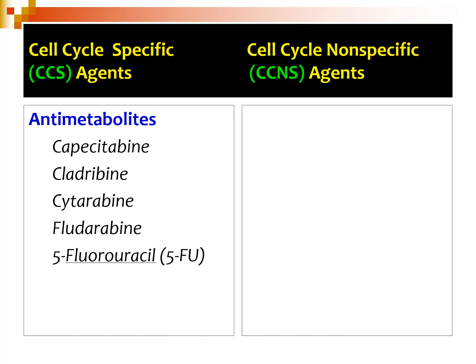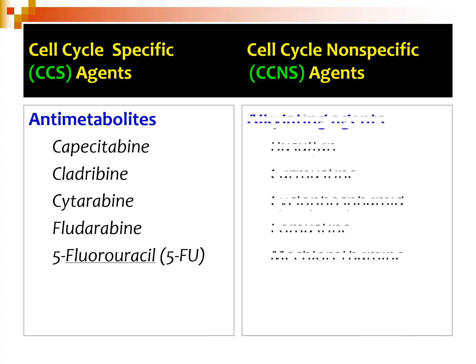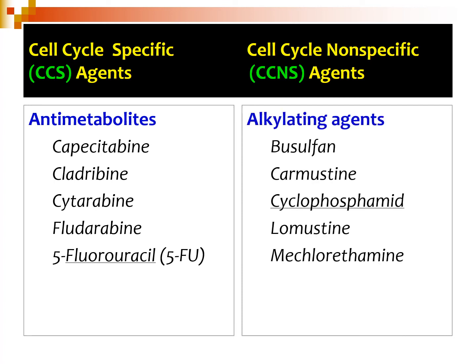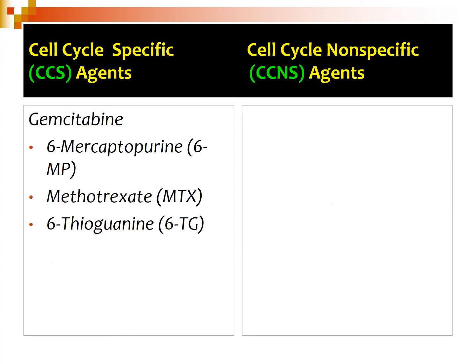Cell cycle specific agents include mainly antimetabolites: capecitabine, cladribine, cytarabine, fludarabine — with 5-fluorouracil being the most important academically and clinically. Cell cycle non-specific agents include alkylating agents such as busulfan, carmustine, lomustine, mechlorethamine — with cyclophosphamide being the most commonly examined and reported clinically. Antimetabolites also include gemcitabine, 6-mercaptopurine, methotrexate, and thioguanine, while non-specific alkylating agents also include melphalan and thiotepa.